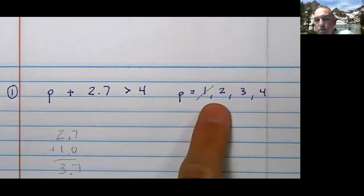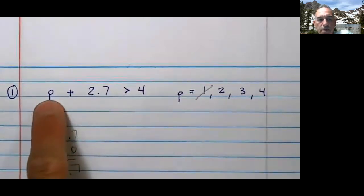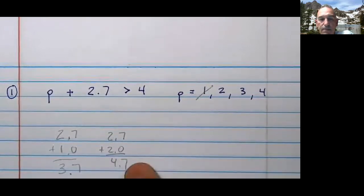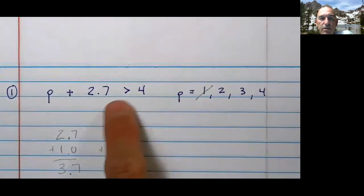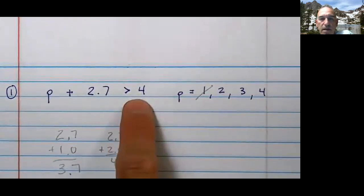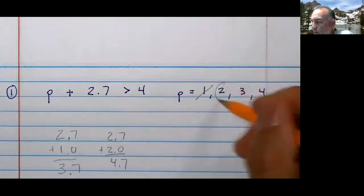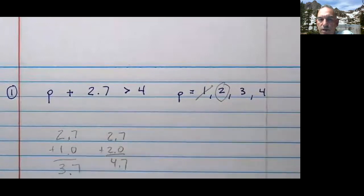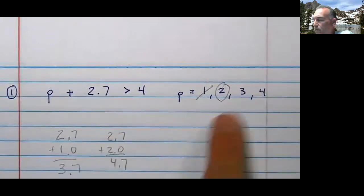Let's try 2. Is 2 greater than 4? If 2 were substituted right there, I'd have 2.7 plus 2. I'd have 4.7. Is 4.7 greater than 4? It is. So that is a solution. And you can see if the numbers are now greater than 2, they're also going to be solutions. Correct?